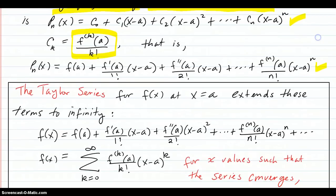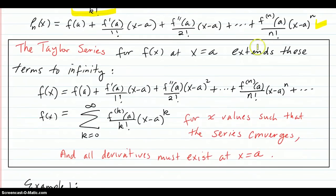The series extends these terms to infinity. So you just put the plus dot dot dot and keep on going in that same pattern. And you write it in series notation: f(x) equals this series right here - your derivatives of f evaluated at a over the k factorial, which matches up to the power x minus a.